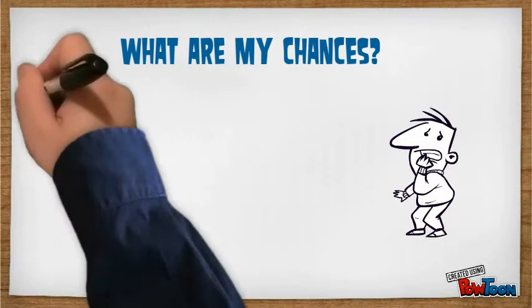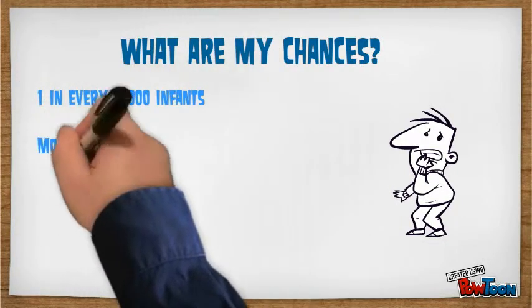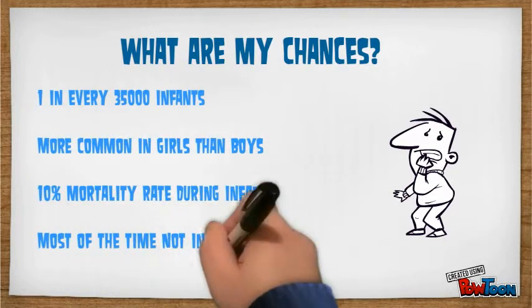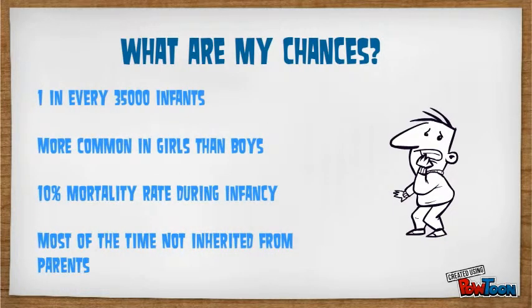What are my chances? There's a chance of one in every 35,000 births and is more common in girls than boys. The mortality rate during infancy is 10%, and the chances that a second child will get Cri du Chat is 1%.